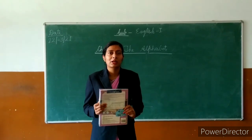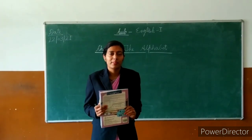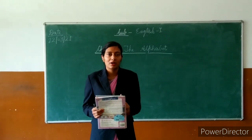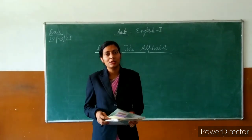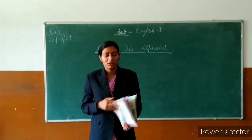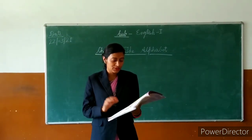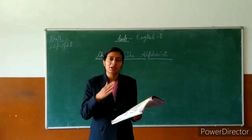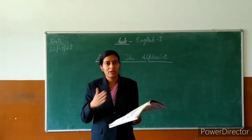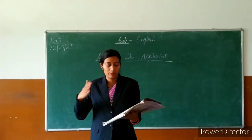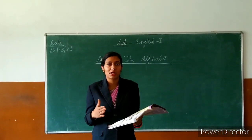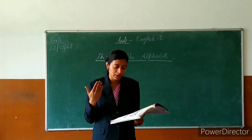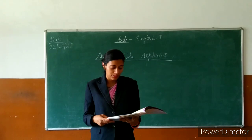How many letters are there in the English alphabet? There are 26 letters in the English alphabet. And this fixed order of letters, from A to Z, is called the alphabetical order — we can also say ABC order.